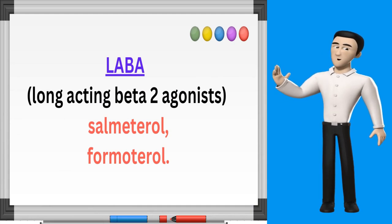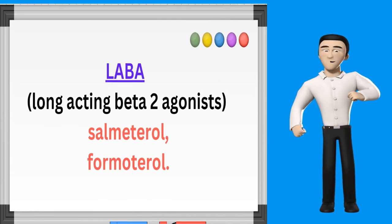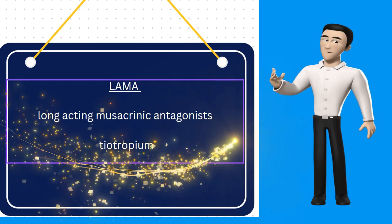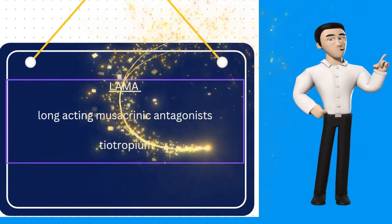LABA stands for long-acting beta-2 agonists like salmeterol and formoterol. LAMA stands for long-acting muscarinic antagonists like tiotropium.